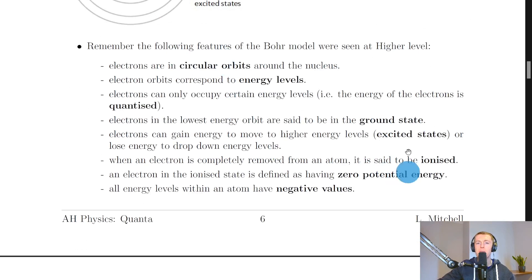And from higher physics you might remember some of these features of the Bohr model which we'll quickly go through. So you should remember that electrons are in circular orbits around the nucleus. The electron orbits correspond to energy levels. Electrons can only occupy certain energy levels i.e. the energy of the electrons is quantized. Electrons in the lowest energy orbit are said to be in the ground state. Electrons can gain energy to move to higher energy levels i.e. excited states or lose energy to drop down energy levels.